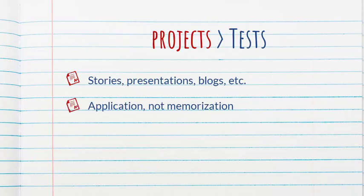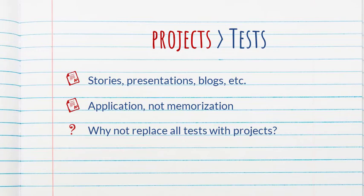I applaud the idea of replacing some tests with projects such as stories, presentations, blogs, etc. This clearly underscores prioritizing application over memorization. The question that arises is: why keep any tests — why not replace all tests with projects? The authors indicate it would have been too radical a change. What I would say is that unassisted and relatively spontaneous performance has a place in our courses. If one of our goals is helping learners develop communicative ability so they can accomplish tasks on their own, I don't see anything wrong with assessing what they can do independently. Projects have value, and spontaneous unassisted performance also has value.